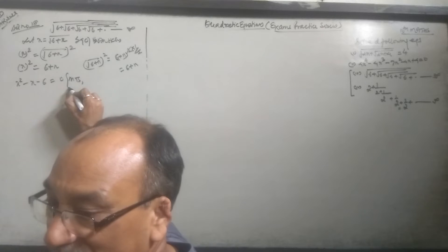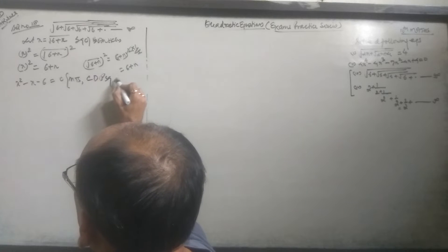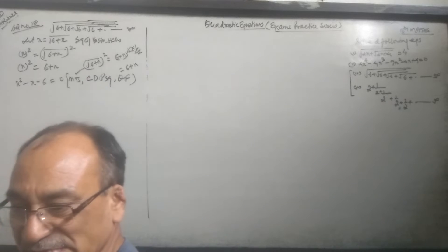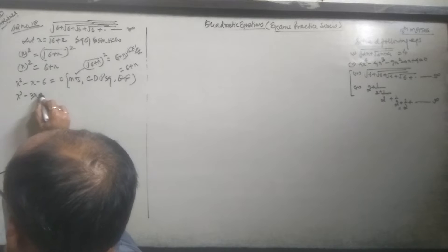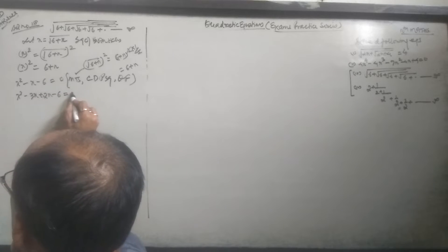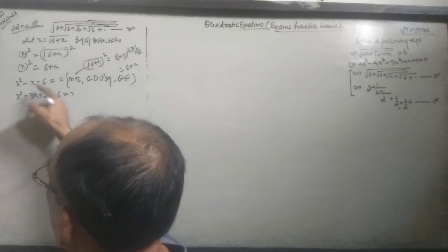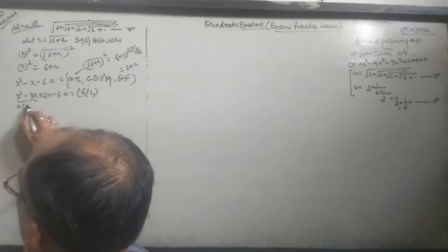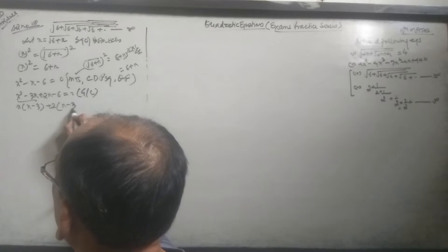Middle term splitting, or completing the perfect square, or quadratic formula - use to save time. I will do X² - 3X + 2X - 6. X(X - 3) + 2(X - 3). (X - 3)(X + 2) = 0.